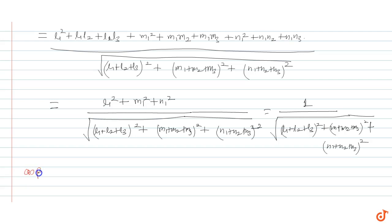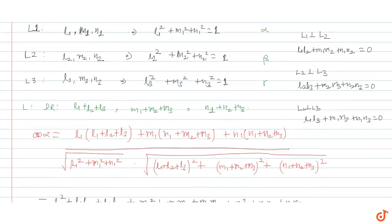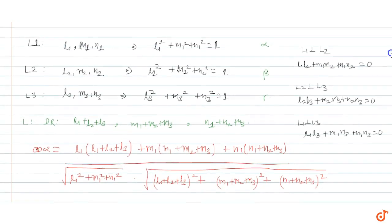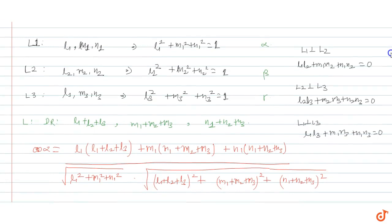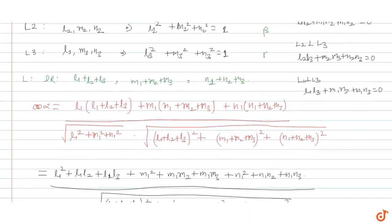Similarly, if we solve for cos beta, we take the dot product of L2's direction cosines with line L's direction ratios and multiply accordingly.